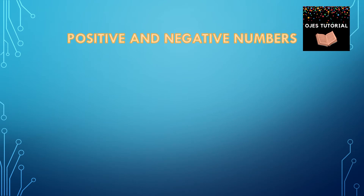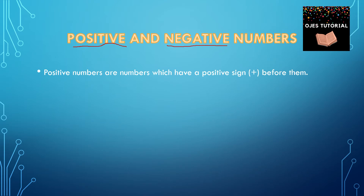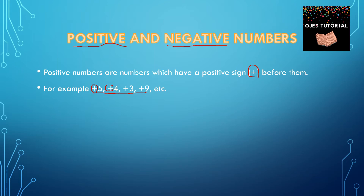Now, let's learn positive and negative numbers. Positive numbers are numbers which have a positive sign, that is plus, before them. For example, plus 5, plus 4, plus 3, plus 9, etc. As we can see, all these examples have a positive sign — plus — before them.